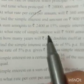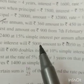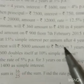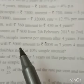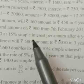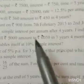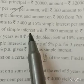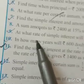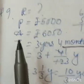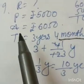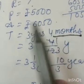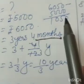Question number 9: at what rate of simple interest will rupees 5000 amount to rupees 6050 in 3 years 4 months? Principal = 5000, amount = 6050, time = 3 years 4 months. You have to find the rate of simple interest. Simple Interest = Amount − Principal = 6050 − 5000 = rupees 1050.